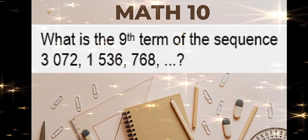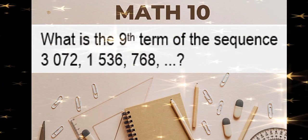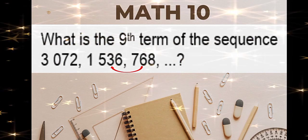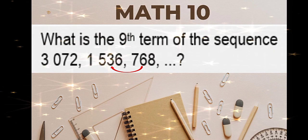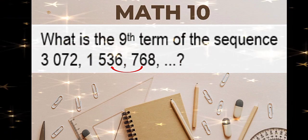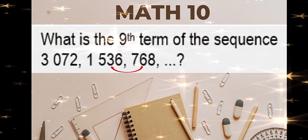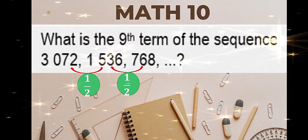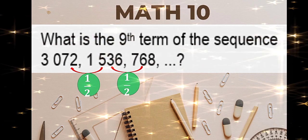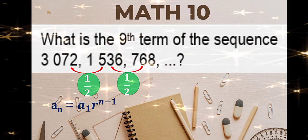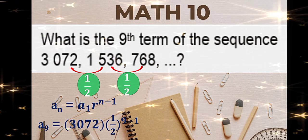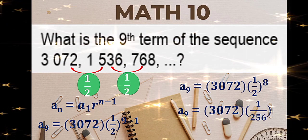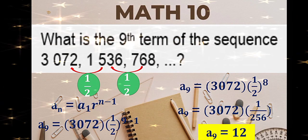What is the 9th term of the sequence 3072, 1536, and 768? We need to find the common ratio. 768 divided by 1536 is 1/2. And 1536 divided by 3072 is also 1/2. This is an example of a geometric sequence whose common ratio is 1/2. Using the formula: n is 9, first term is 3072, ratio is 1/2 and n is 9. Simplify: (1/2) raised to 8 is 1 over 256. Multiply by 3072. The 9th term is 12.